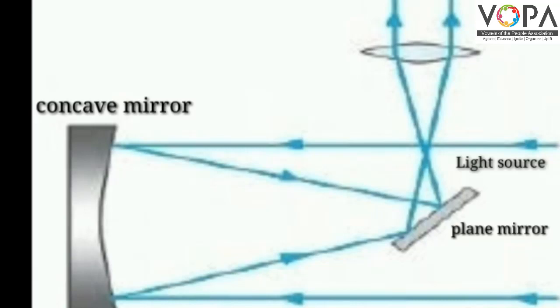The plane mirror deflects these rays for focusing, passing through the eyepiece, and the image gets formed.